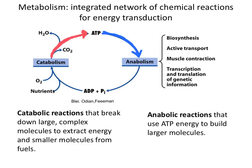Metabolism can be defined as a set of chemical reactions taking place in the cell. It can be divided into two different kinds: catabolism and anabolism. Catabolism means extraction of energy as ATP molecules, which is the currency of the cell. Anabolism can be defined as the use of ATP molecules to build large molecules from smaller ones.